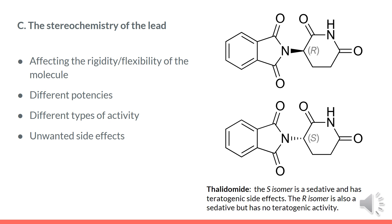Consequently, the overall shape of the structure of a molecule is an important consideration when designing an analogue. Some structural features impose a considerable degree of rigidity on a structure, whilst others make the structure more flexible. Other structures give rise to stereoisomers, which can exhibit different potencies, types of activity, and unwanted side effects. For example, thalidomide exists in two mirror image forms — it is a racemic mixture of R and S enantiomers. The R enantiomer has sedative effects, whereas the S isomer is teratogenic. Under biological conditions, the isomers interconvert, so separating the isomers before use is ineffective.